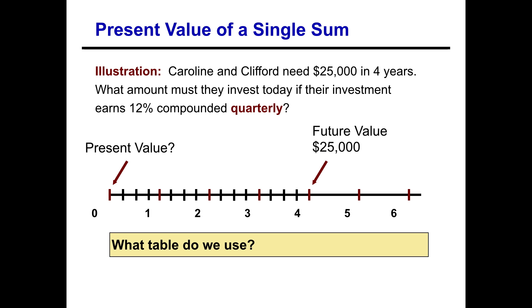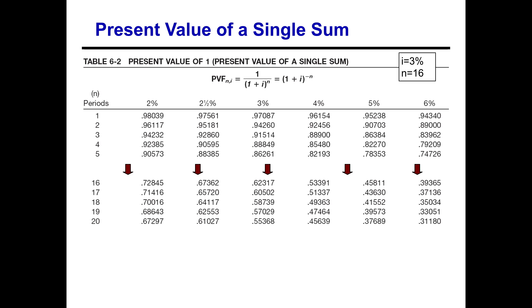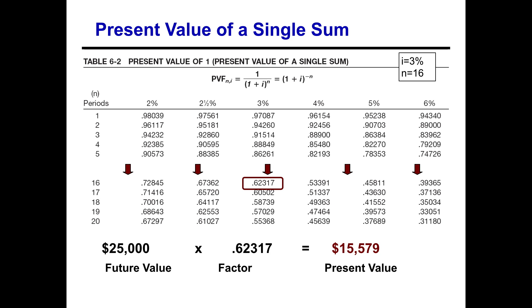We need to get the interest rate per period. At three percent per quarter, we go to our table, find the three percent column, scroll down to sixteen periods, and find the factor to be 0.62317. Multiply that times the $25,000 future value and you find that you would need to invest $15,579 today to have $25,000 four years from now compounded quarterly.